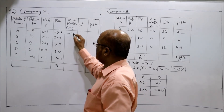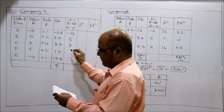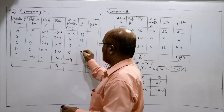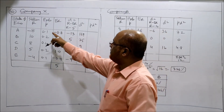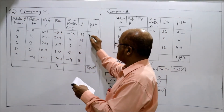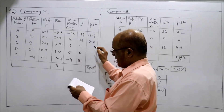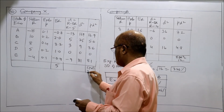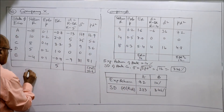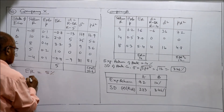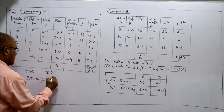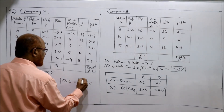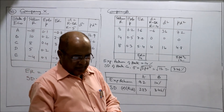Now compute R minus ER: minus 8 minus 5 = minus 13; then 5; 3; 0; minus 9. Squaring these: 169, 25, 9, 0, 81. Multiplying by probability (PD²): 0.1 × 169 = 16.9; then 5; 3.6; 0; 8.1. Summation of PD² = 33.6. The expected return is 5% and standard deviation is the square root of 33.6, which equals 5.8%. Company X is now complete.